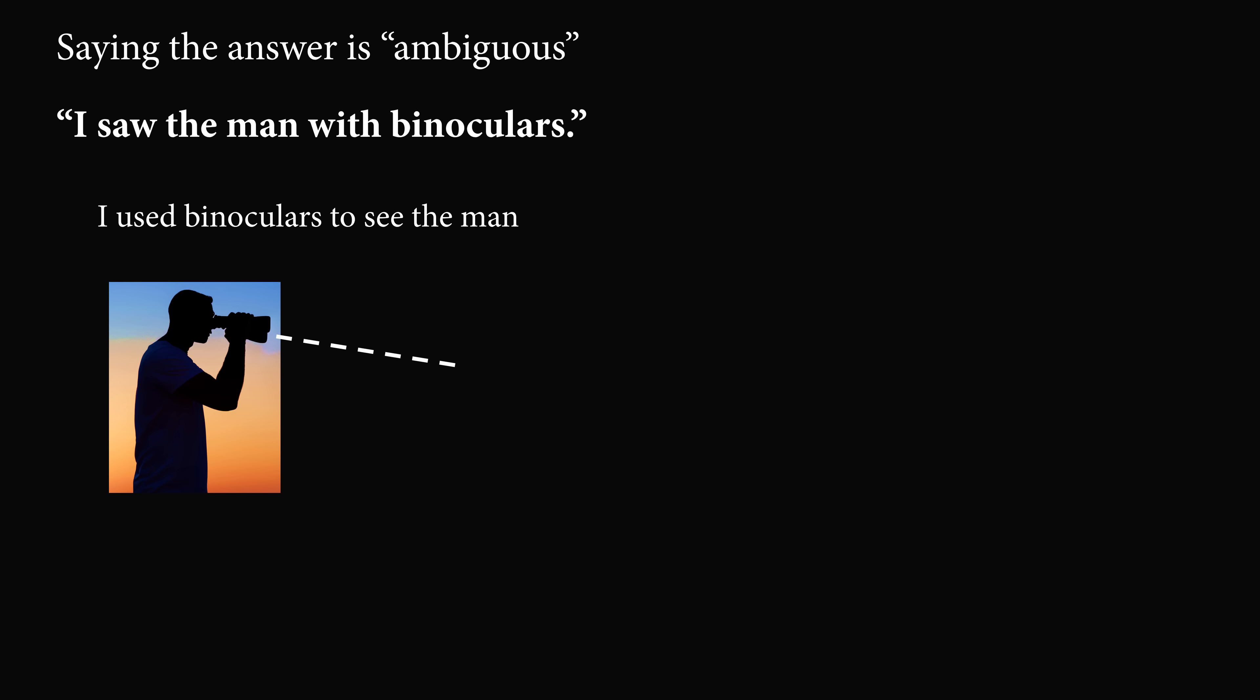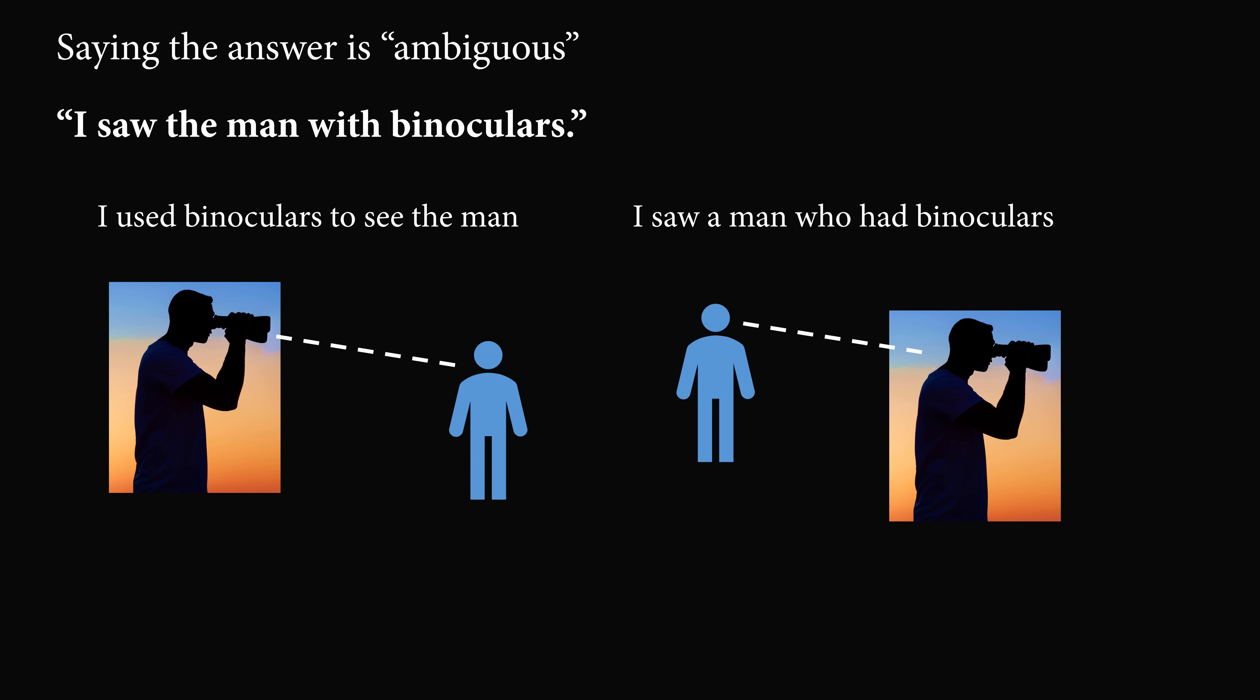So let me address the issue of the people who say the answer is ambiguous. Think about the sentence, I saw the man with binoculars. Does that mean you use binoculars to see the man? Or does it mean I saw a man who had binoculars? There are two ways to interpret this sentence. But so far, I've never seen anyone say that we need to ban every single ambiguous sentence in the English language. We deal with ambiguity, we resolve it, we interpret things in context. It's actually a bit of the fun of life.